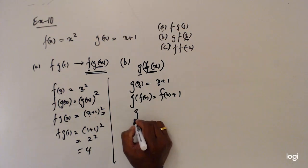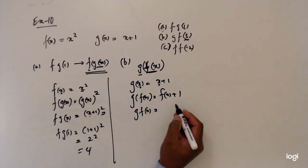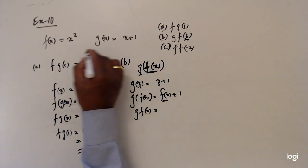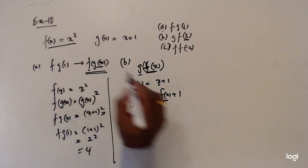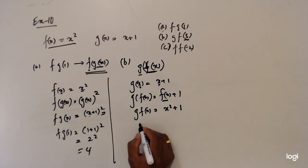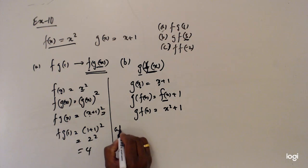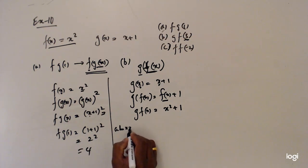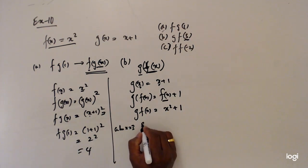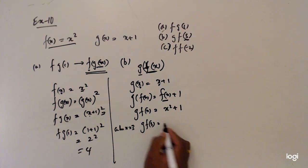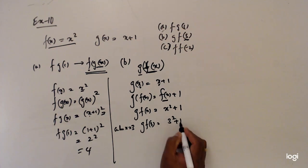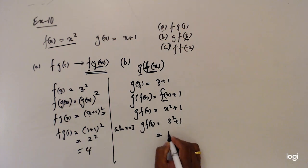So gf(x) equals f(x) plus 1. What is f(x)? f(x) equals x squared, so gf(x) equals x squared plus 1. Now when x equals 3, gf(3) equals 3 squared plus 1, which equals 10.